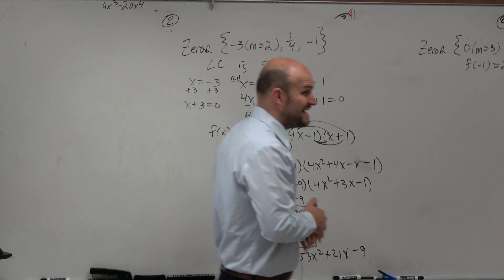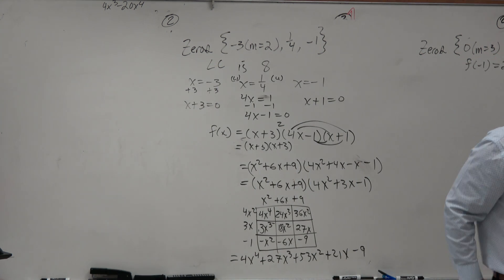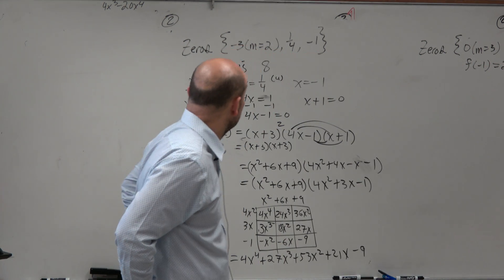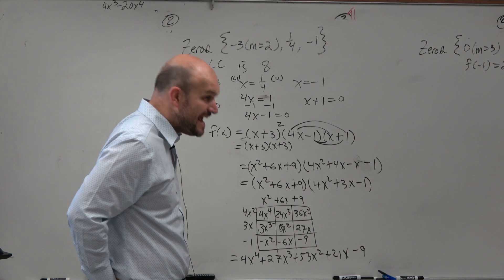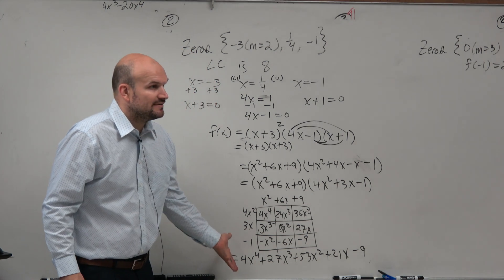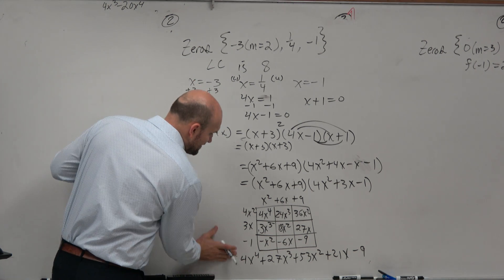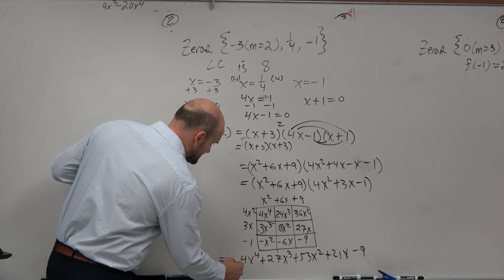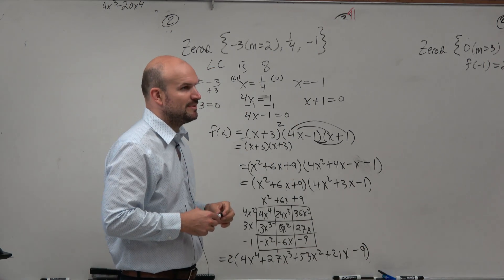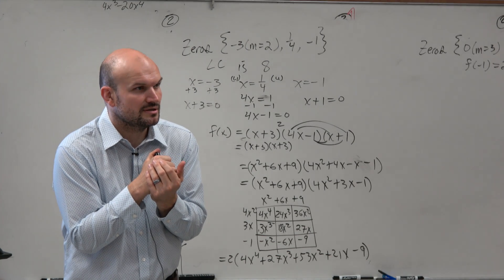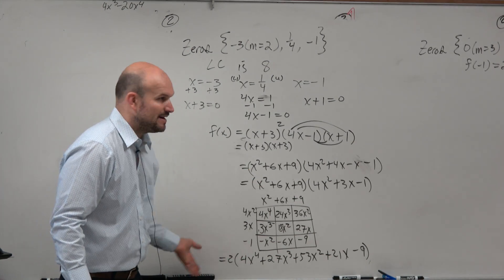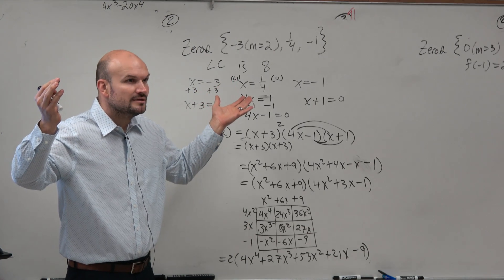Now the question is actually not done yet, is it? No — because I gave you one more piece of information: the leading coefficient needs to be 8. Could I just multiply everything by 2? Yes. I'll put parentheses around everything and say it should all be multiplied by 2. Does multiplying by 2 change the zeros? No — because you could just divide by 2 on both sides and find the zeros, and it wouldn't even matter.